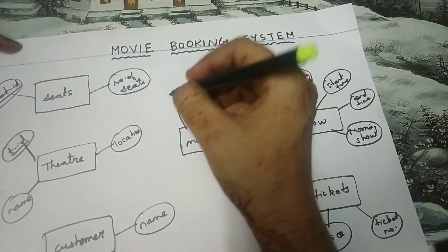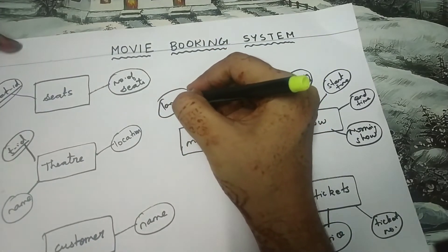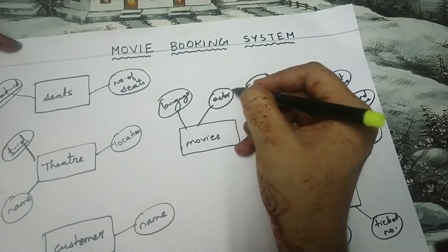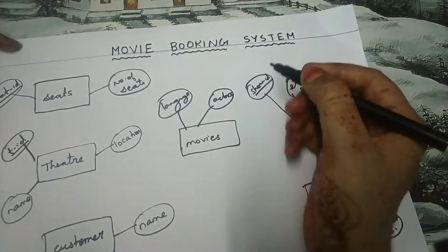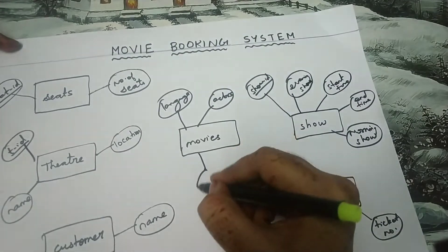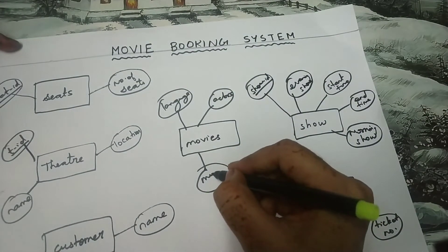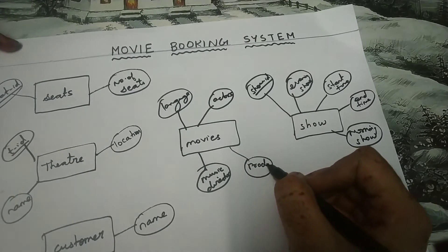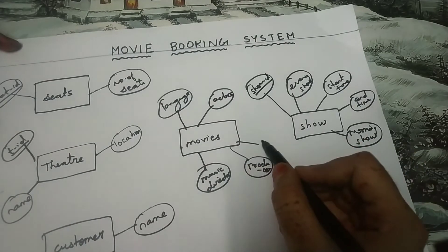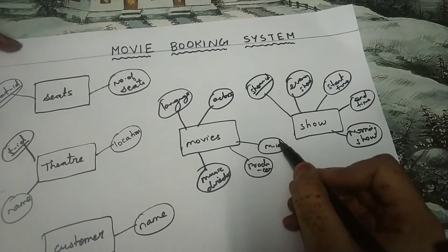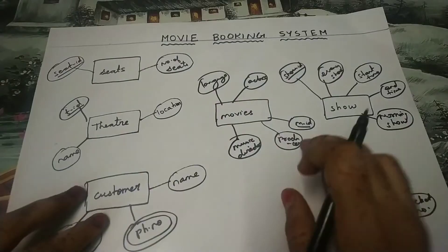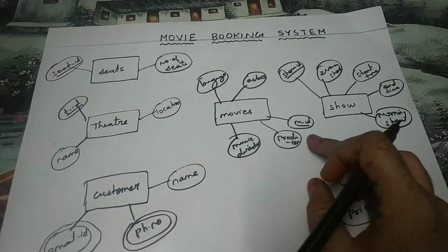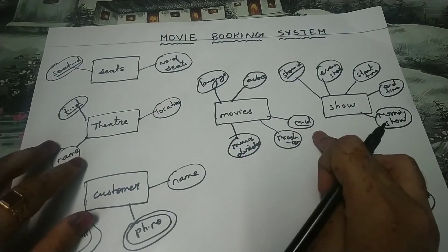The attributes of movies are: language, actors, music director, and producer. Movie ID is also an attribute and it must be underlined because it is a primary key. Every movie will have a unique ID.